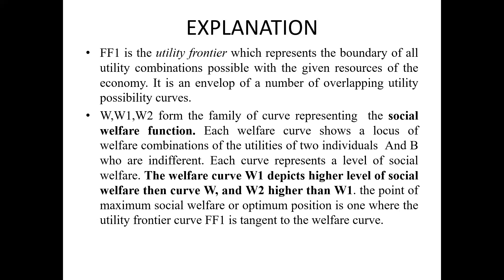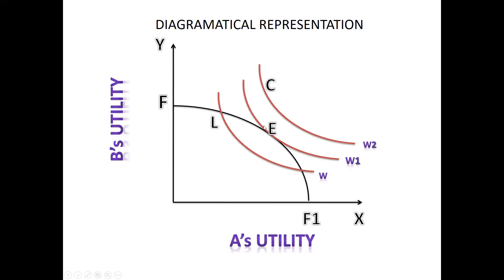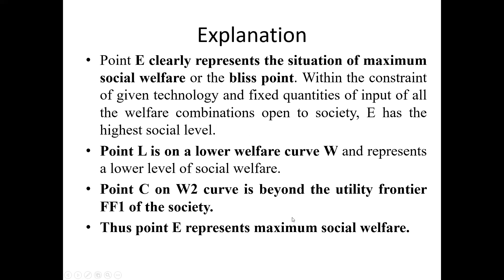The point of maximum social welfare or optimum position is where the utility frontier FF1 is tangent to the welfare curve. That is point E on W1. Point E clearly represents the situation of maximum social welfare, also called the bliss point, within the constraint of given technology and fixed quantities of inputs. Point L is on a lower welfare curve W and represents a lower level of social welfare, while point C on W2 is beyond the utility frontier FF1 — so point E represents maximum social welfare within the limits.